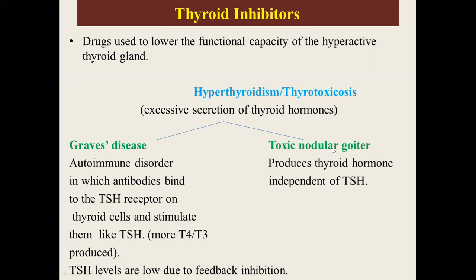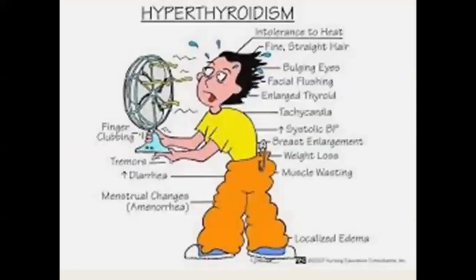In toxic nodular goiter, a swelling produces thyroid hormone independently of TSH, producing a large amount of thyroid hormones. The features of hyperthyroidism include intolerance to heat, tachycardia, high blood pressure, weight loss due to high basal metabolic rate, muscle wasting, diarrhea, menstrual changes like amenorrhea, tremors, and exophthalmos. Clinically, these signs and symptoms are examined in thyroid patients.